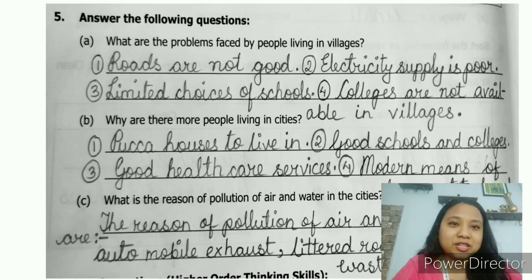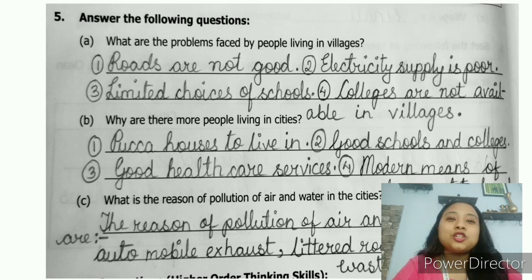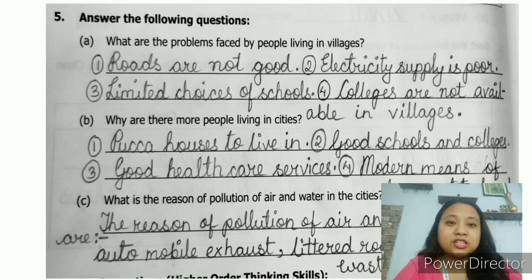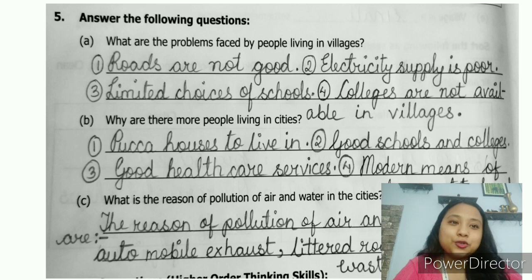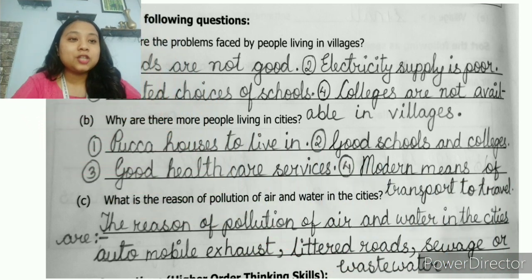For question 5A, the problems faced by people in villages: number one, roads are not good — dilapidated condition of roads; number two, electricity supply is poor; number three, limited choices of schools; number four, colleges are not available. Moving on to question 5B: Why are there more people living in cities? Number one, pakka houses for living; number two, good schools and colleges; number three, good healthcare services; number four, modern means of transport to travel.